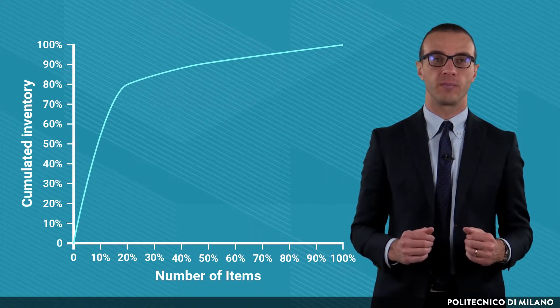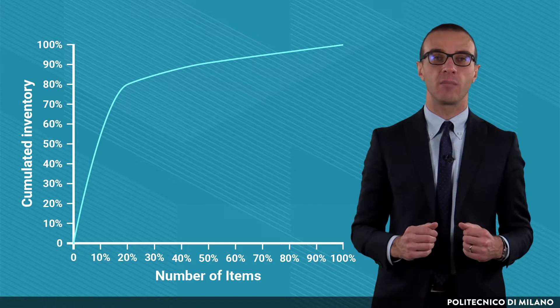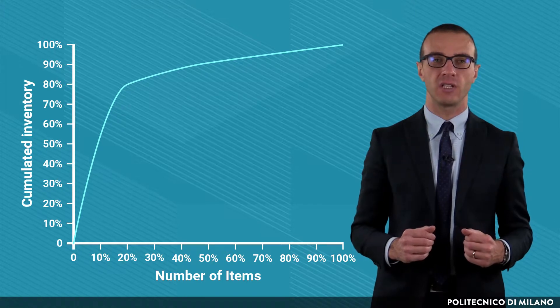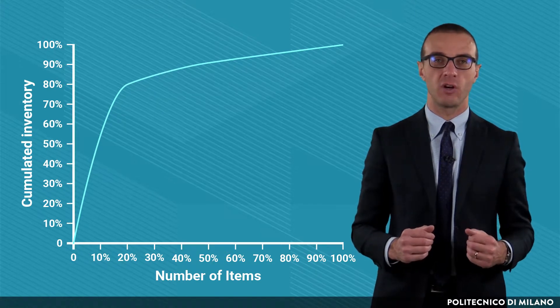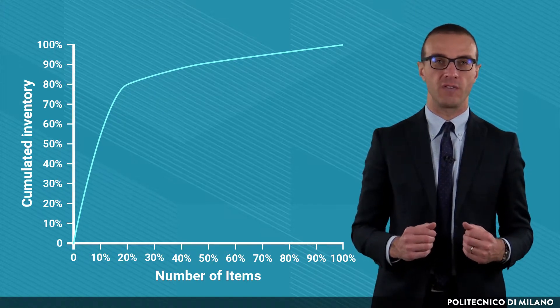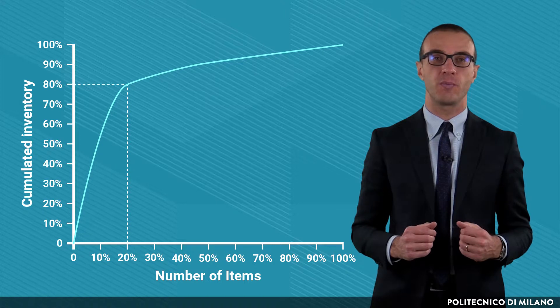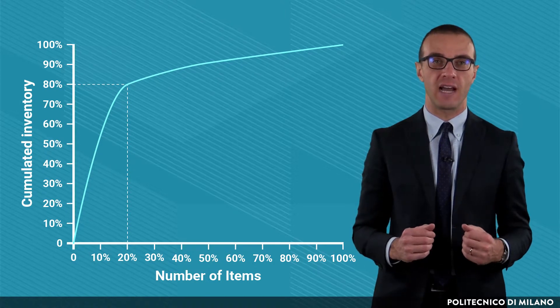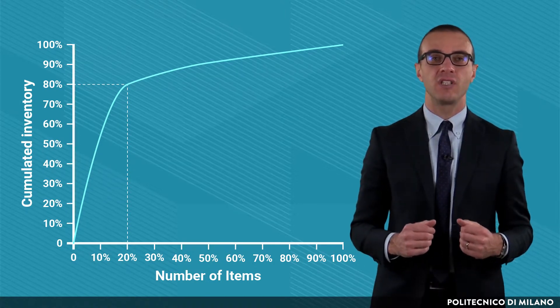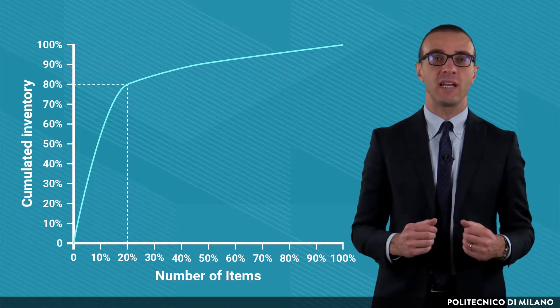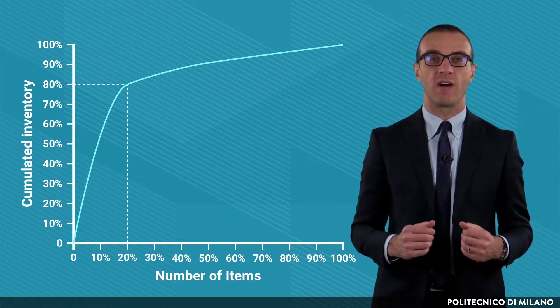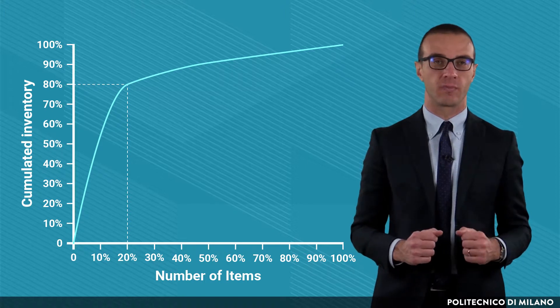According to the Pareto Curve, a limited number of factors are responsible for a great part of the effect. For example, 20% of the items sold by a company could determine 80% of the value of the stock.